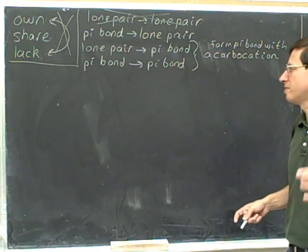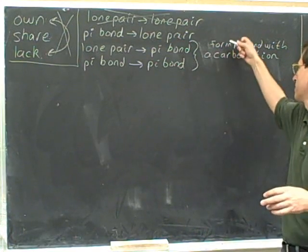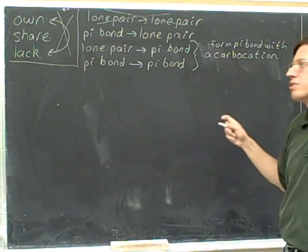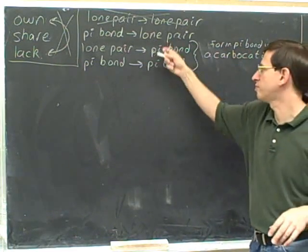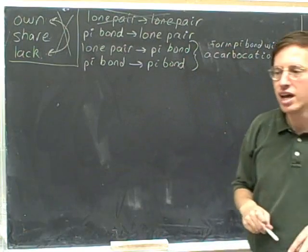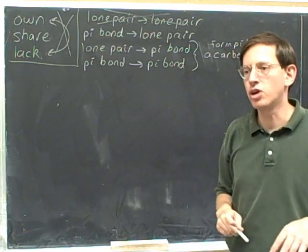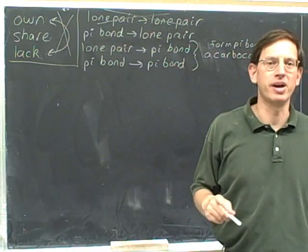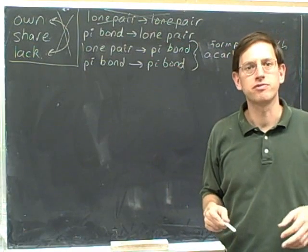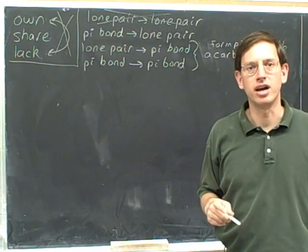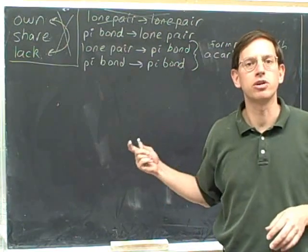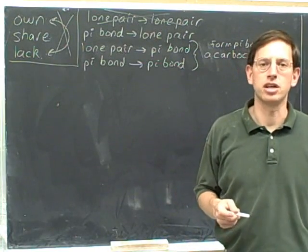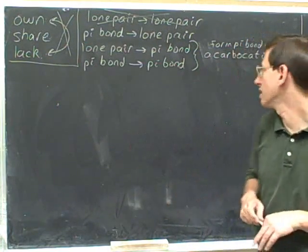We don't need to worry about exceeding an octet as long as we're forming the pi bond with a carbocation. Now there's one other way to form a pi bond without exceeding an octet: it's okay to form a new pi bond on an atom as long as it's losing one of its old pi bonds, because that way it's gaining electrons on one side but losing electrons on the other.